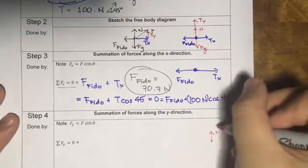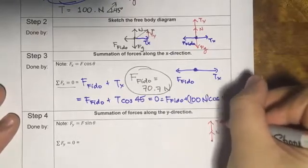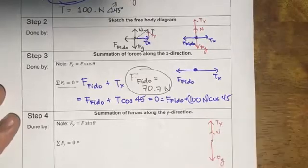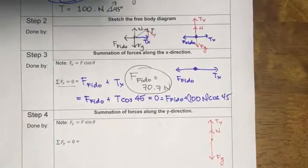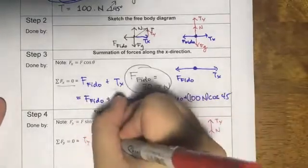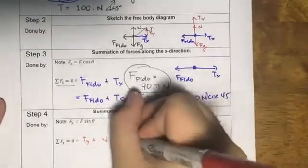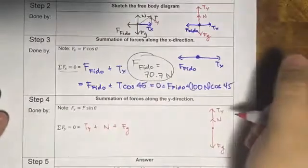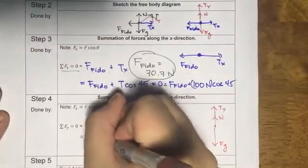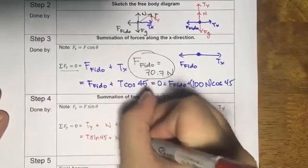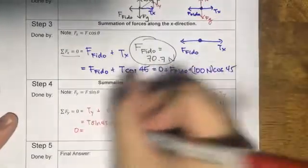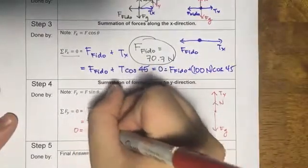You have normal force, you have the tension in the y, you have gravity. So all of those should add up together: tension in the y, normal force, and gravity. What is tension in the y? That is simply T sine of 45, plus n, plus Fg. So that's zero, is equal to T equals 100 sine of 45, plus n, plus Fg.